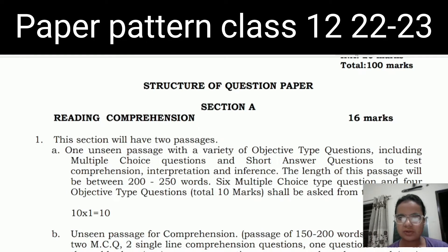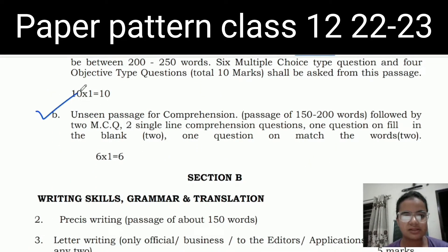First, we will discuss Reading Comprehension in section A. In this section, there will be two passages. One is Unseen Passage with objective type questions, multiple choice questions, and short answer questions. The passage will test comprehension and interpretation. There will be multiple choice questions, then four objective types.